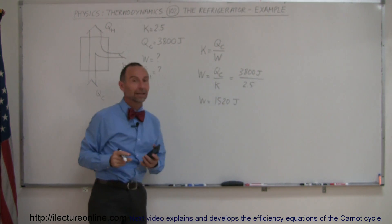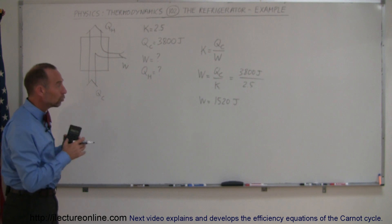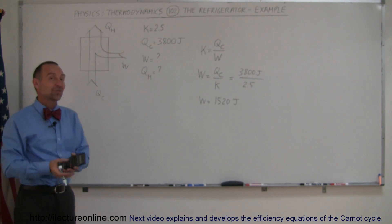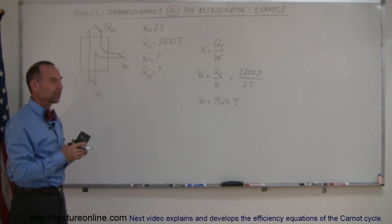What this means is that the compressor has to do 1,520 joules of work in order to extract 3,800 joules of heat out of the refrigerator. That's a pretty good deal.